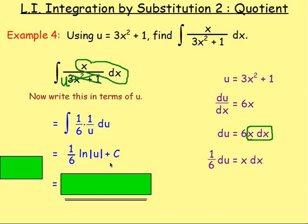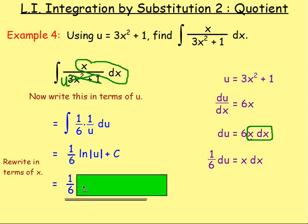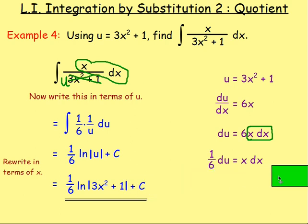From there we have our answer, but it's in terms of u. We want to rewrite it in terms of x. So the 1/6 ln will stay as it is, but u is going to be replaced with 3x squared plus 1. So we'll have 1/6 ln|3x squared plus 1| plus c, and that's our answer.